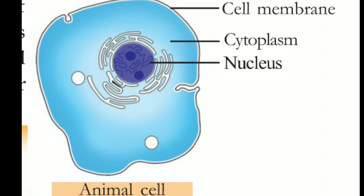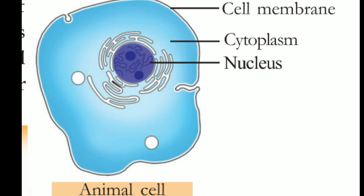The picture given in the 12th page of your textbook shows an animal cell. This is an animal cell. The structure of an animal cell — the cell membrane is the outer covering of a cell. Then the next is cytoplasm.